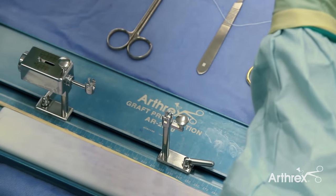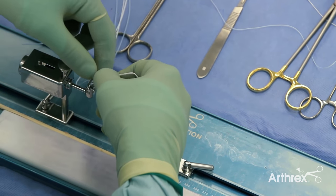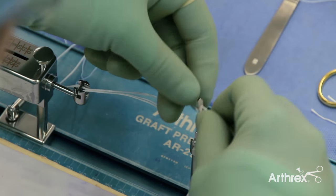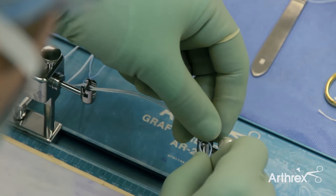The ACL tightropes are loaded onto the graft preparation station such that all graft preparation can be carried out without an assistant.